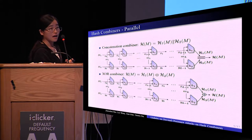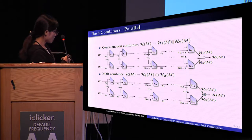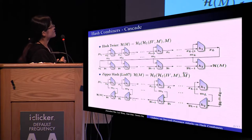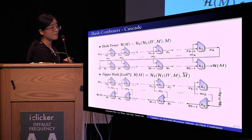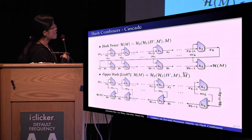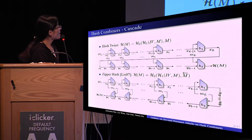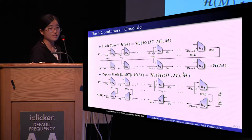The XOR combiner outputs the XOR of the two n-bit hash digests, so the result is n bits. Besides the parallel combiners, there are also cascade combiners such as Hash-Twice and Zipper Hash. Hash-Twice sequentially processes the same message under two hash functions by replacing the IV of the second hash function with the final state of the first. Zipper Hash is very similar; however, it processes the message blocks in reverse order under the second hash function.